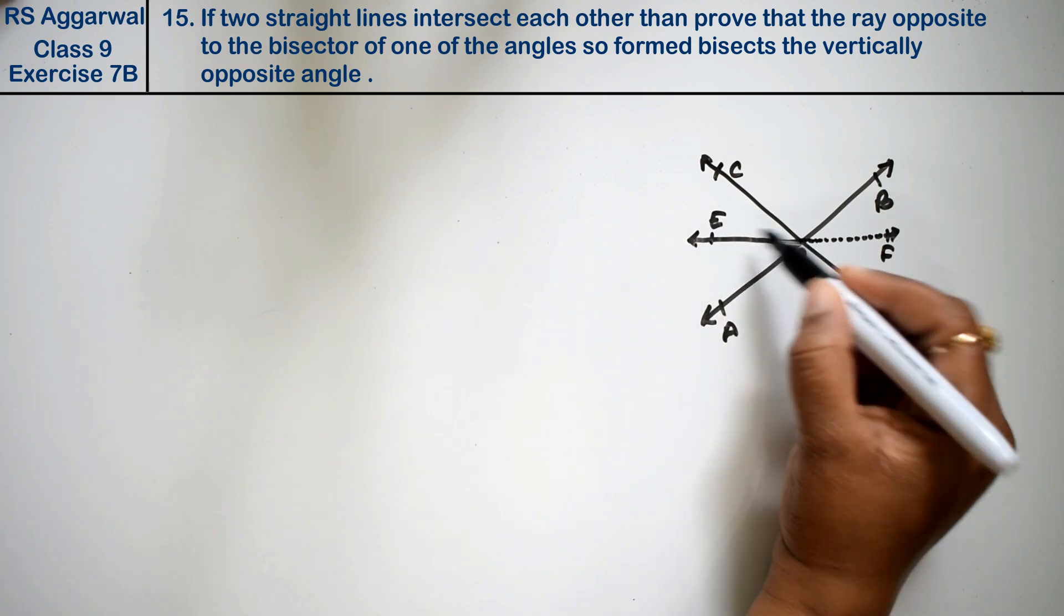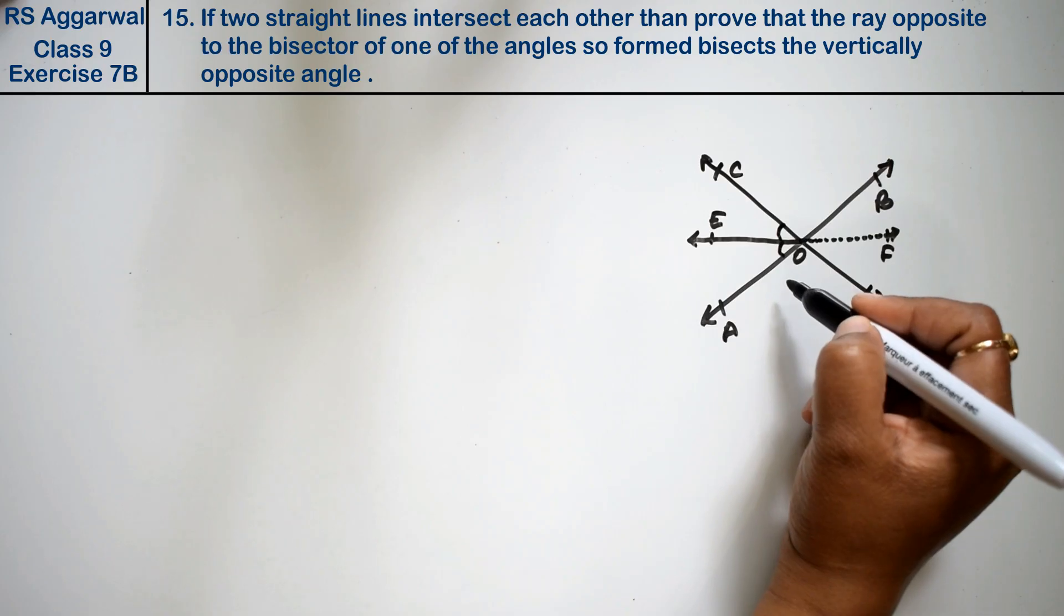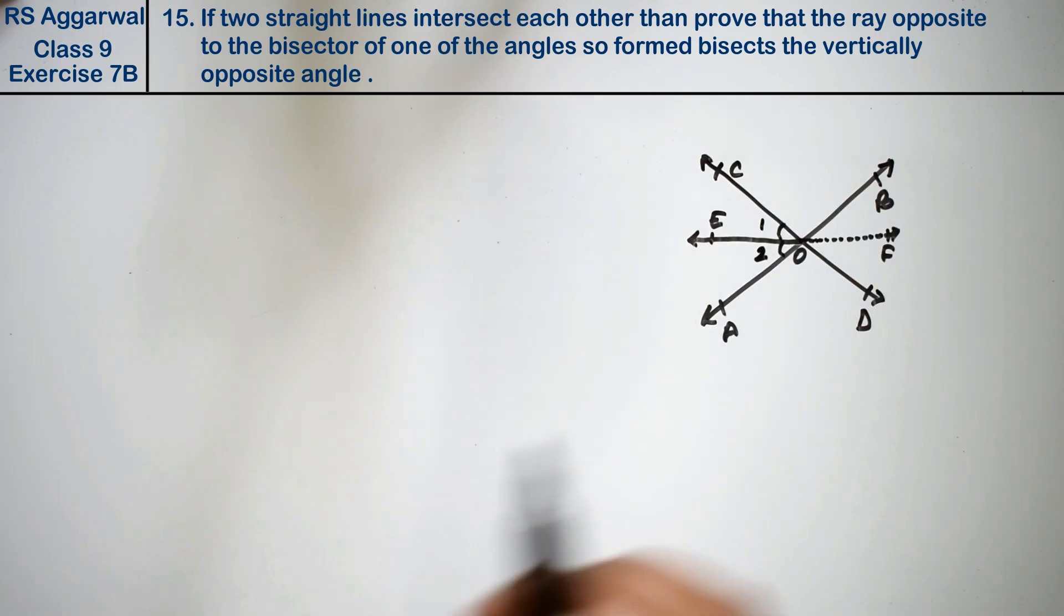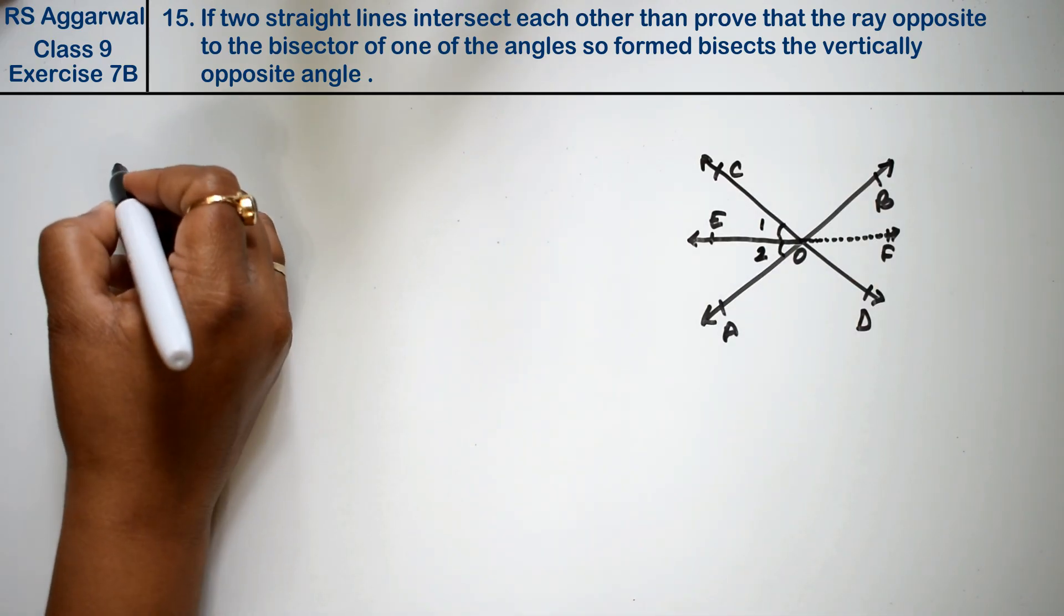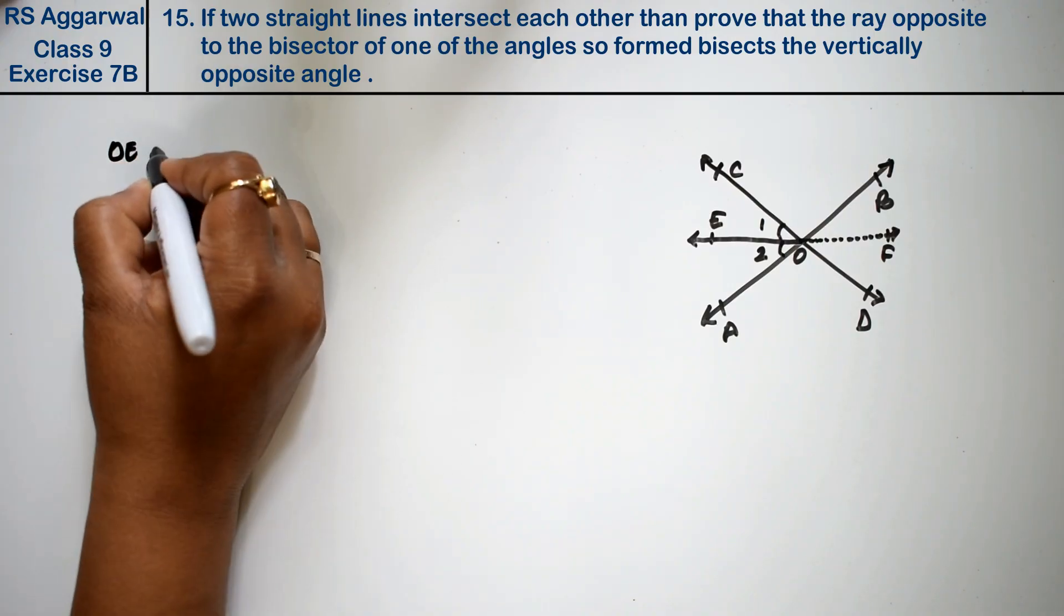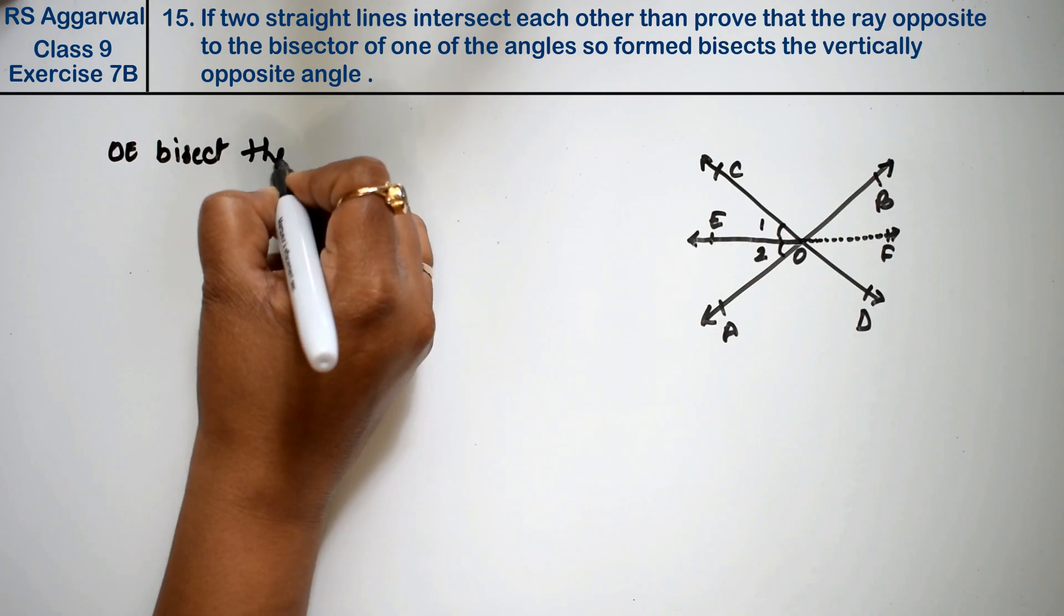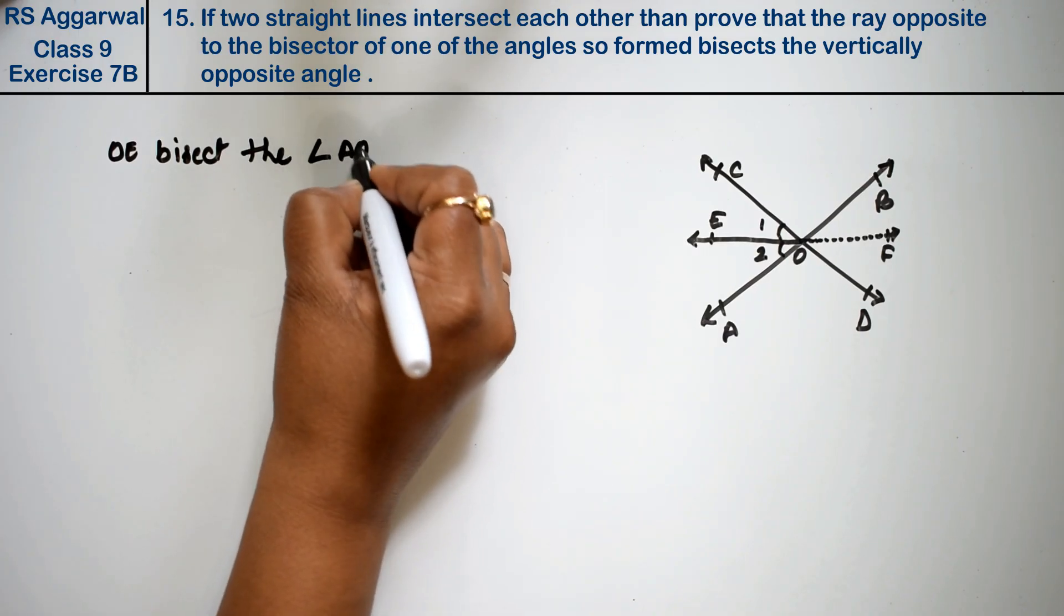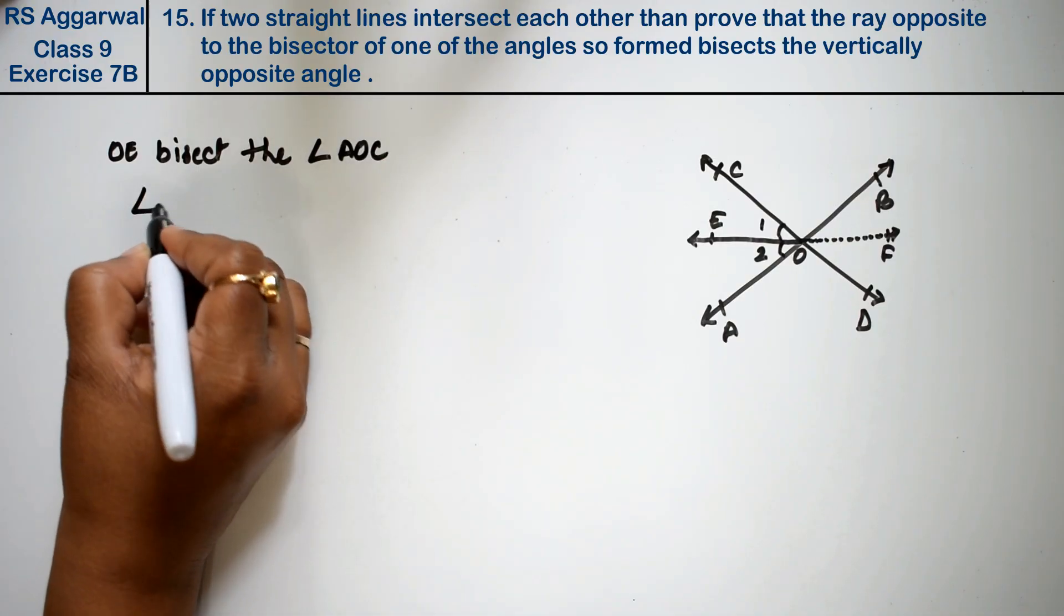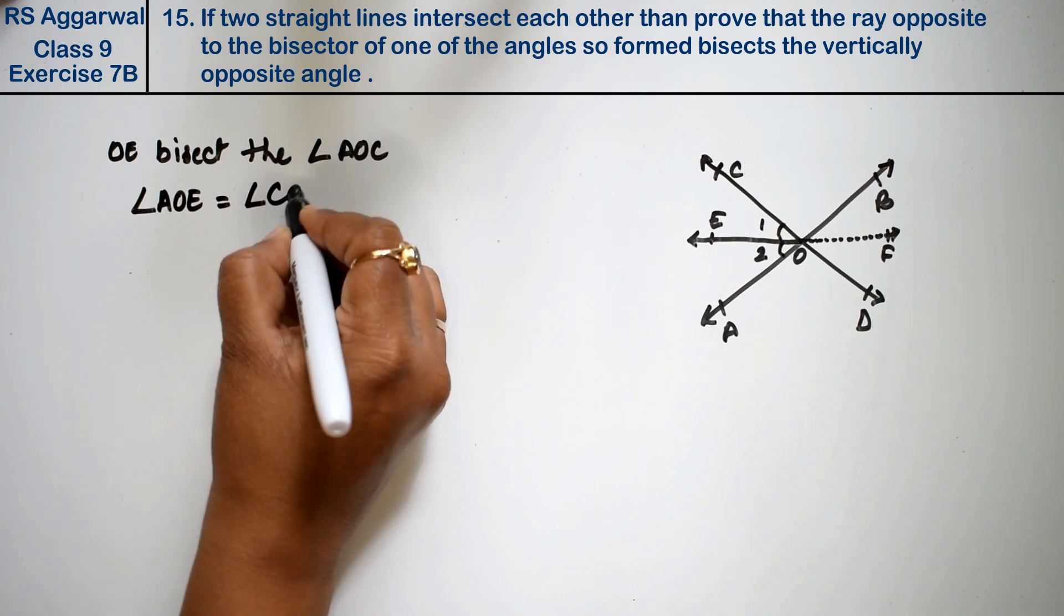We know that OE is the bisector, so this angle is equal to this angle. If I consider this angle 1 and this angle 2, then see, what are we saying? OE bisects the angle AOC. OE is bisecting the angle AOC, then angle AOE is equal to angle COE.